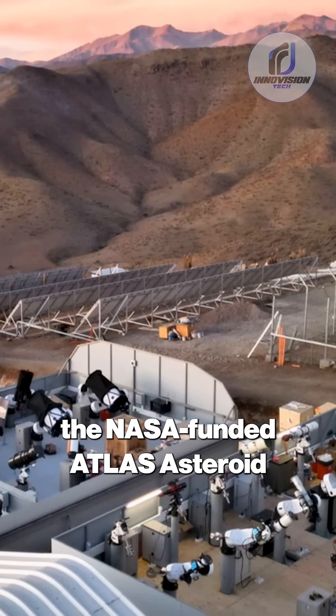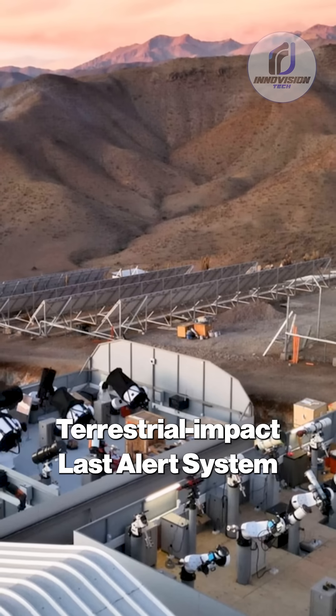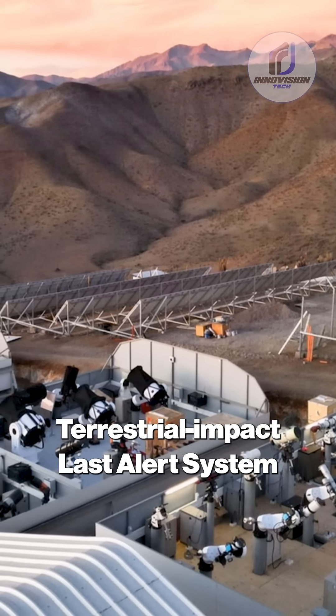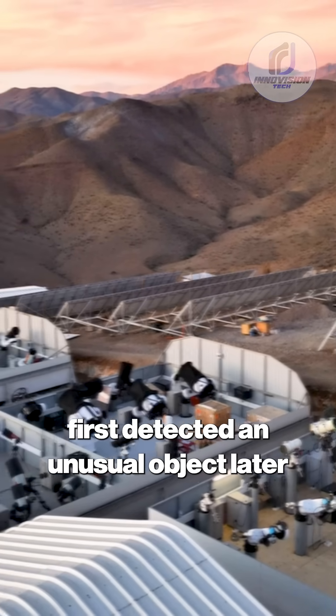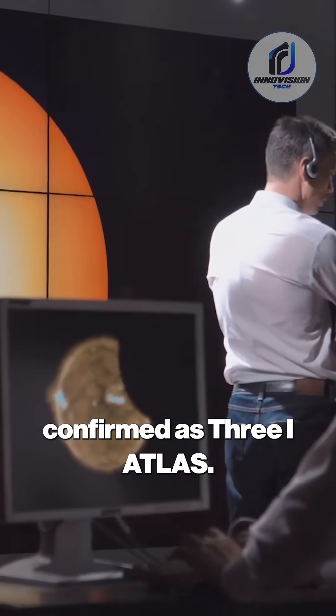On July 1, 2025, the NASA-funded Atlas Asteroid Terrestrial Impact Last Alert System Survey Telescope in Rio Hurtado, Chile, first detected an unusual object later confirmed as 3-1 Atlas.